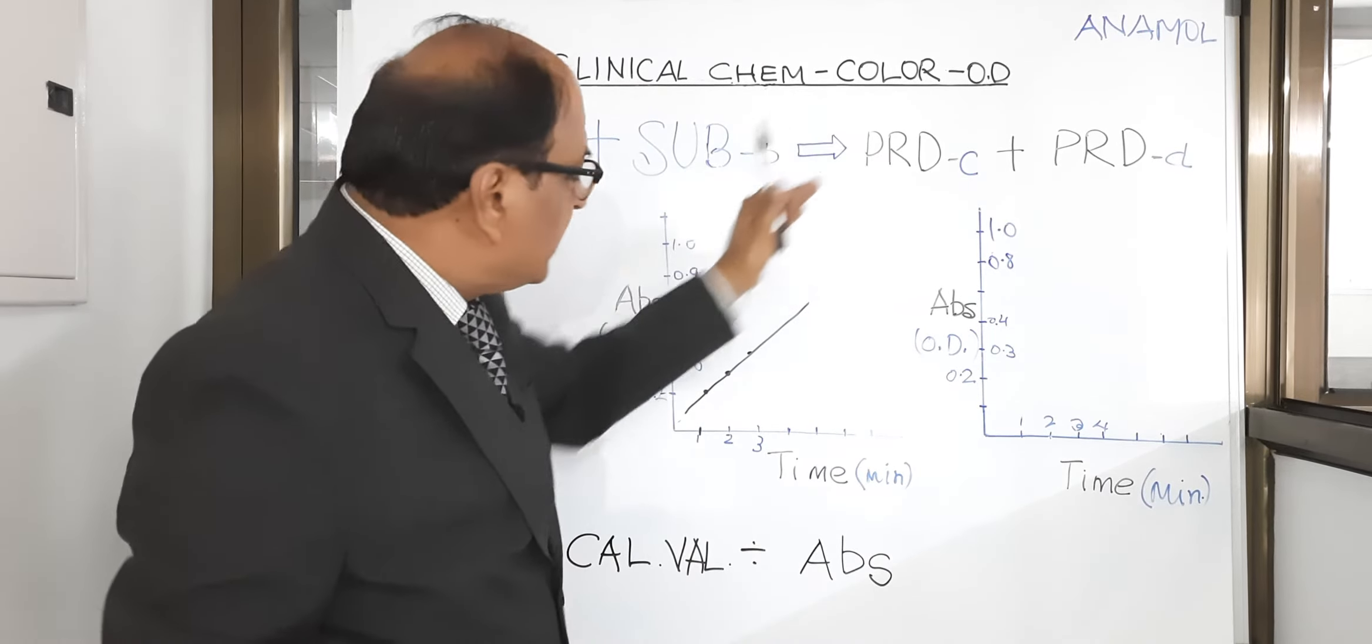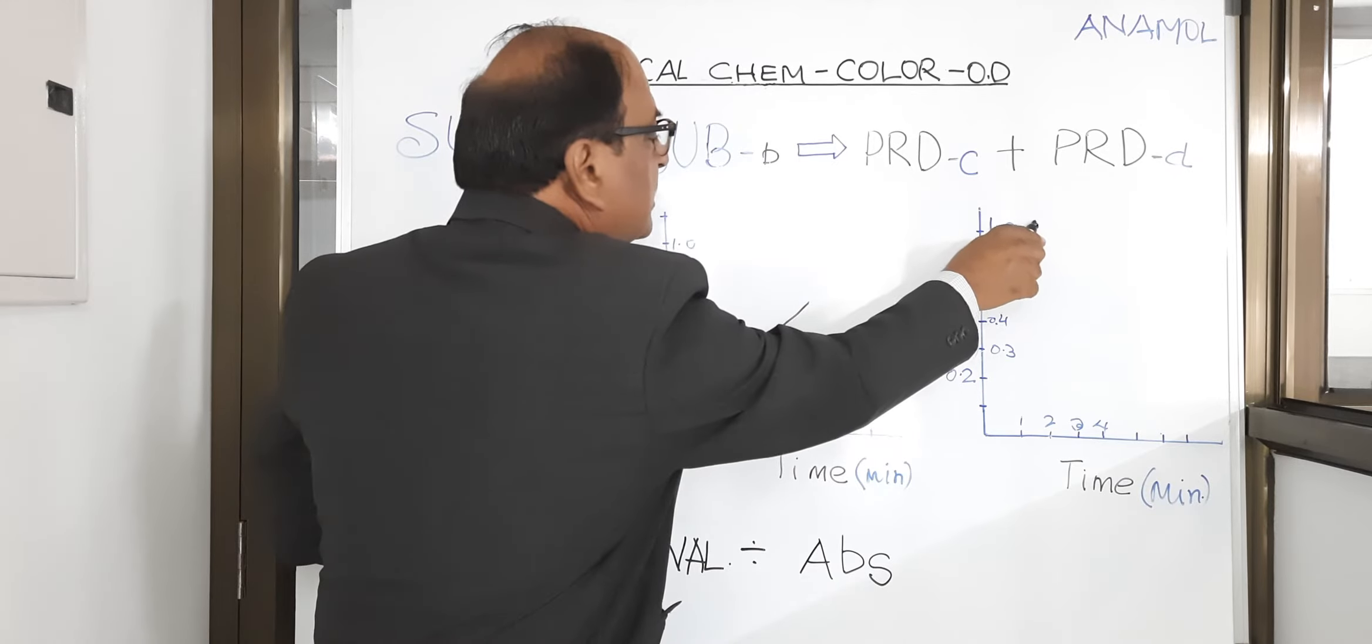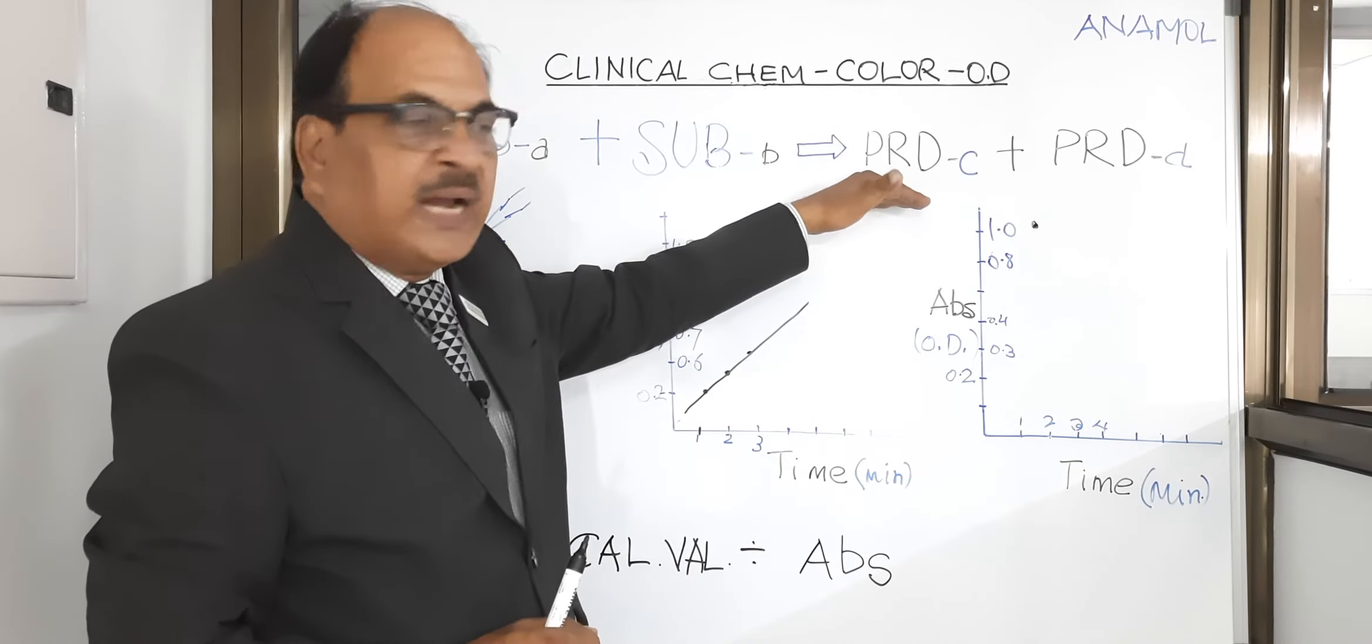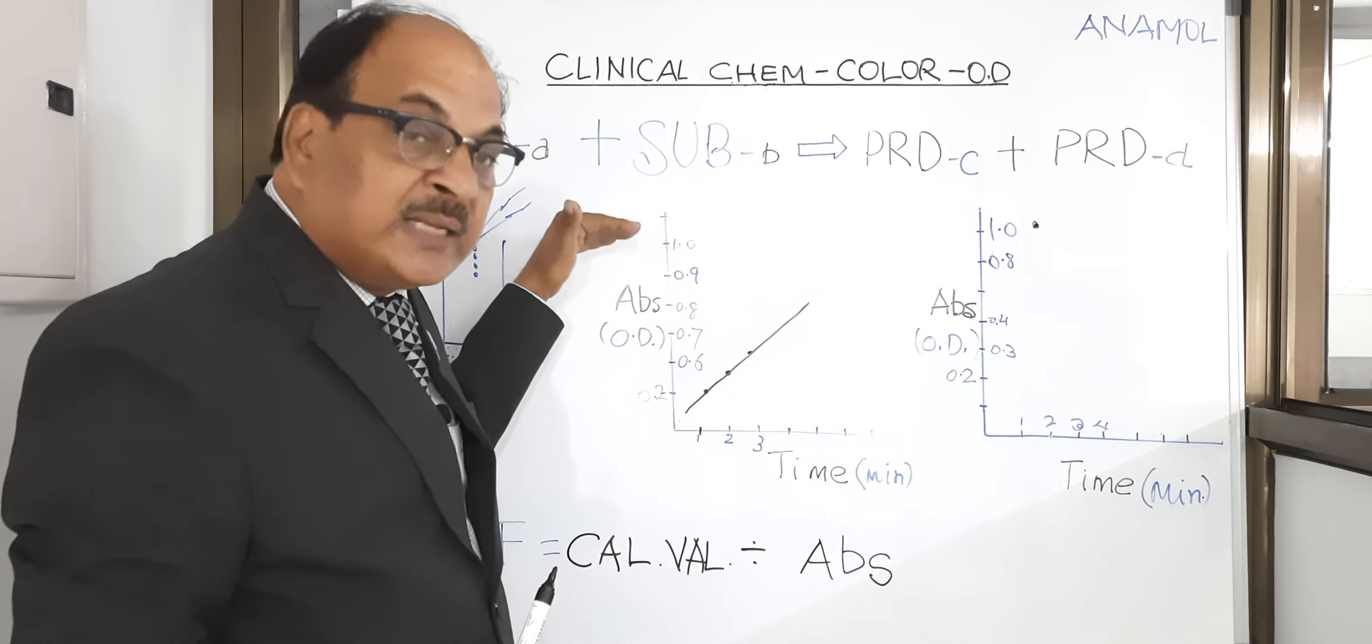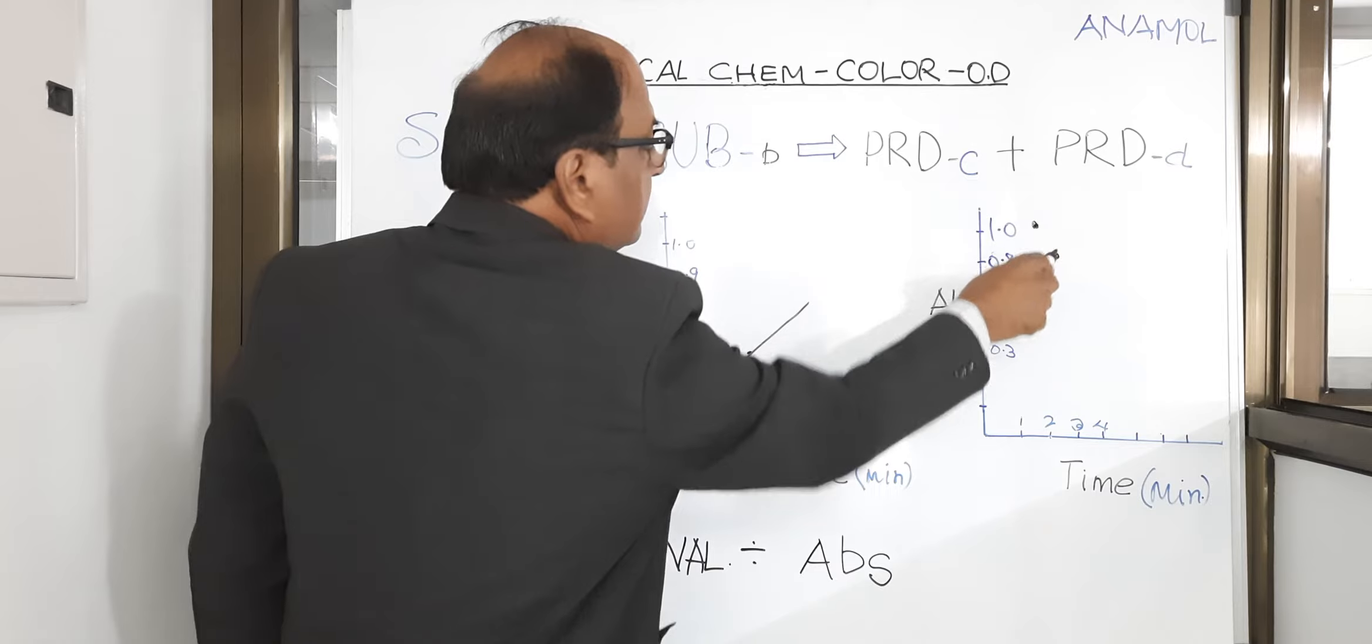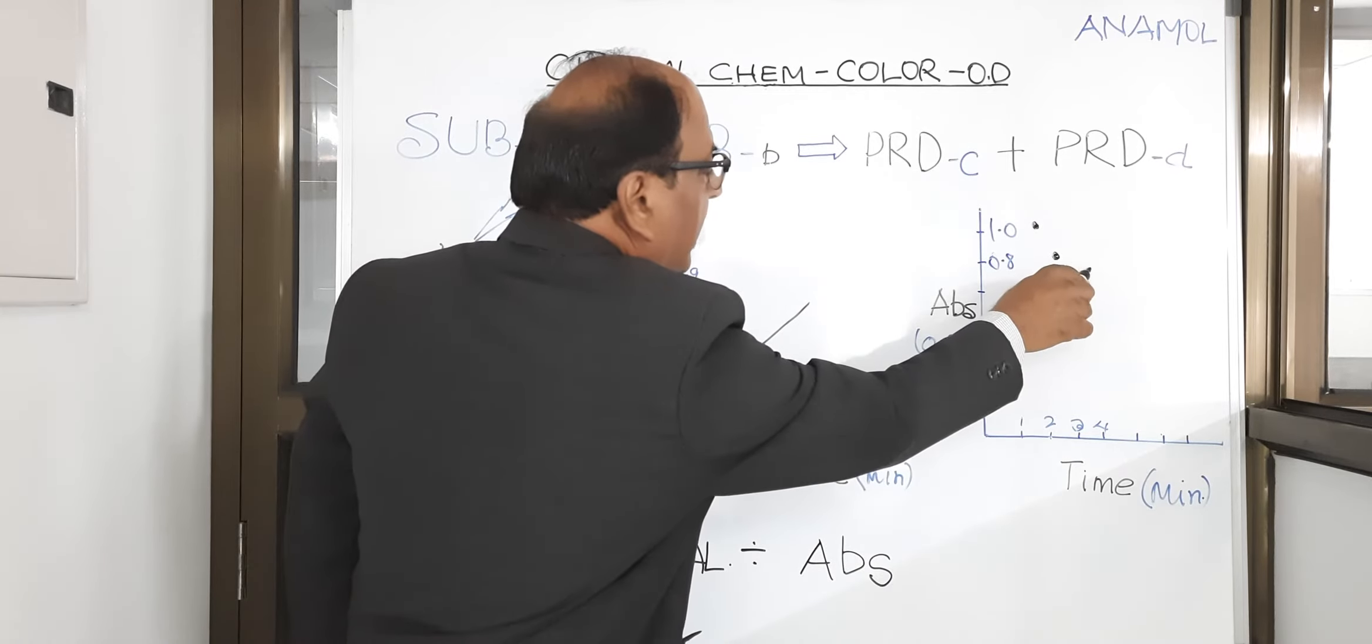In the reaction when it produces NAD plus, that is a zero absorbance chemical. So as the reaction progresses, initially there will be very high amount of NADH in the reaction, so at first minute very high optical density, 1.0. As the reaction moves, NADH gets consumed, turns into NAD plus, that means less of colored compound NADH, that means lower the absorbance. At minute number two you will have 0.8 absorbance.